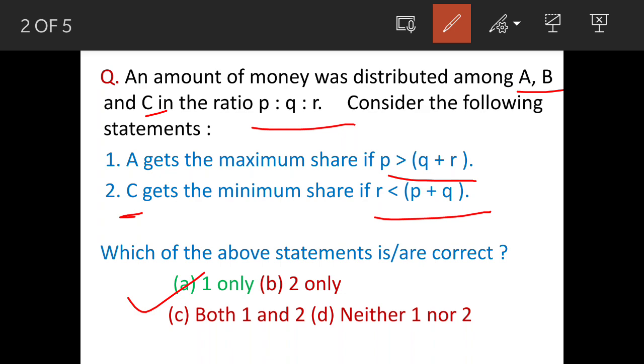But here understand the language. A gets the maximum share, that means definitely he will get maximum share if p is greater than q plus r. And C gets minimum share, that means definitely he is getting lowest share if r is less than p plus q.